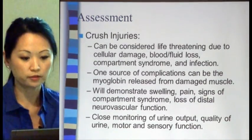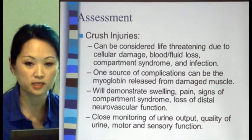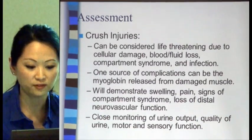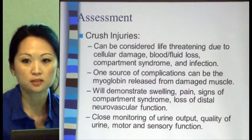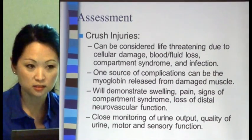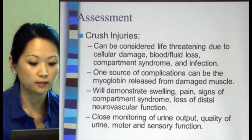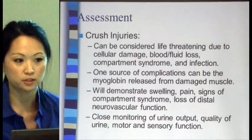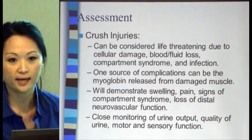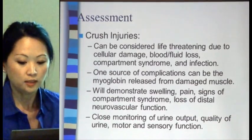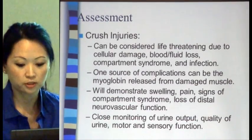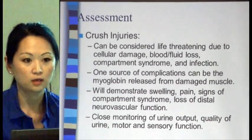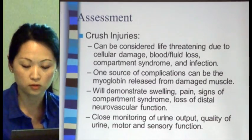Crush injuries can be considered life-threatening because of cellular damage, blood and fluid loss, compartment syndrome, and infection. One major complication is rhabdomyolysis — when myoglobin is released from damaged muscle into the bloodstream. This is bad because it can cause renal failure, so it's important to monitor urine output and quality. The urine will usually be very dark — it almost looks like Coca-Cola.